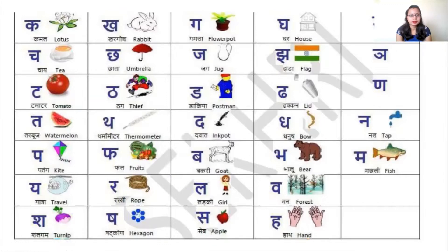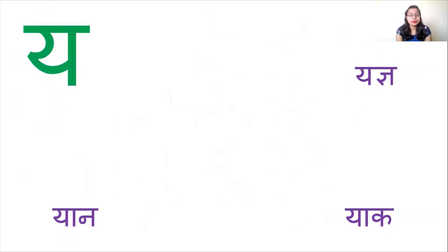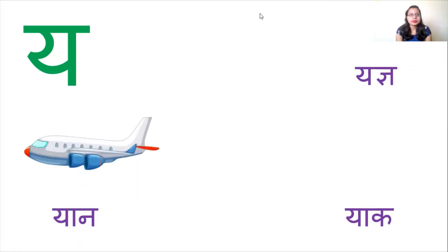We are in the sixth line, where we have the letters Y and R. Today we are going to do these two letters. First we will start with the letter Y. We'll see how to write it, how to pronounce it, and what pictures or words start with this letter.